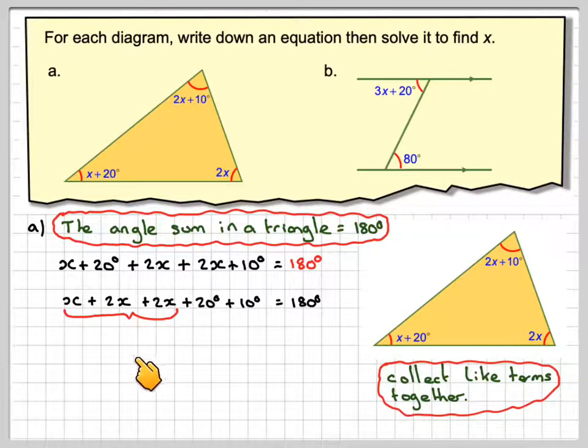x plus 2x plus 2x makes 5x, 20 plus 10 makes 30, so that's equal to 180 degrees. This is now an equation that we are familiar with how to solve.